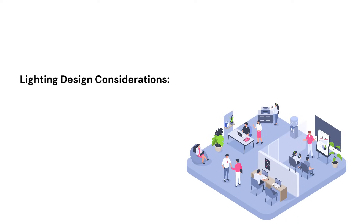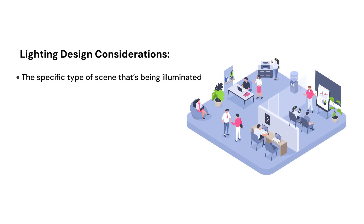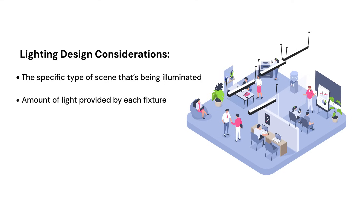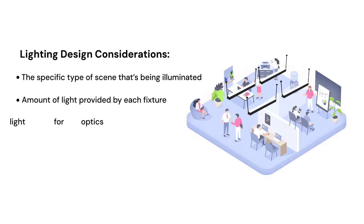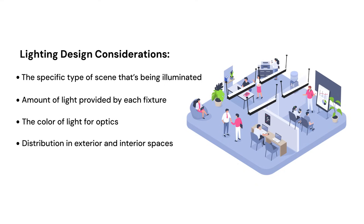Here are some additional considerations for lighting design: the specific type of scene that is being illuminated, the amount of light provided, the color of the lights for optics, and the distribution of light in exterior and interior spaces.